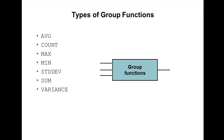What are the different types of group functions? There are several: average, count, max, minimum, standard deviation, and variance. The average function gives the average value of a column, ignoring null values. Count gives the number of values. Max gives the maximum value of an expression, ignoring nulls. Minimum gives the minimum value of an expression, ignoring nulls. Standard deviation and sum gives the sum of values of n, ignoring null values.